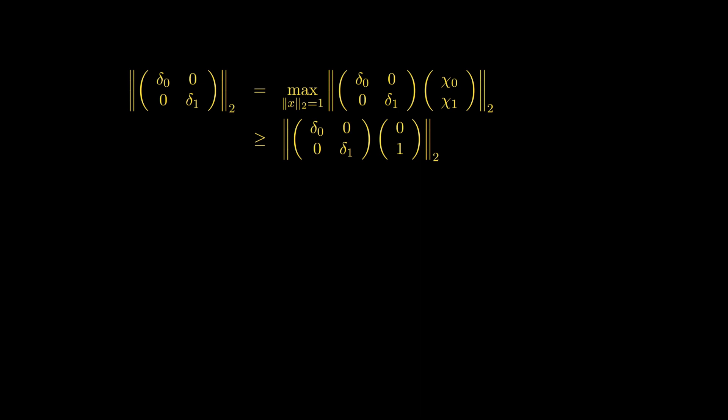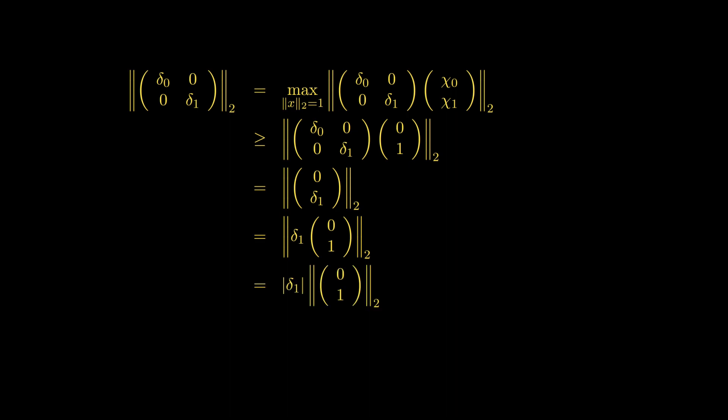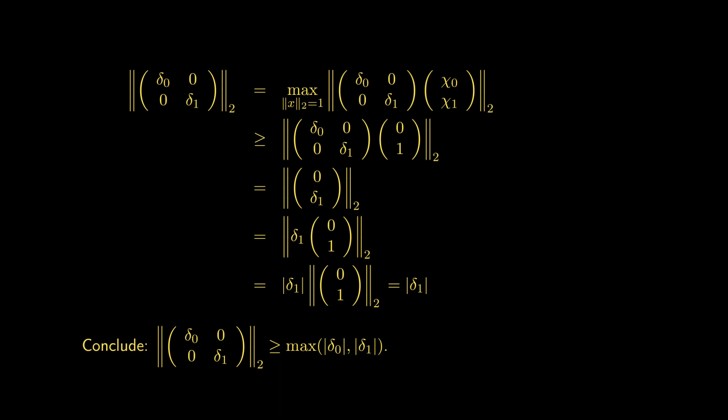Here we pick the standard basis vector (0,1). If we multiply it out, we can bring out δ₁, and we find that gives us the absolute value of δ₁. We could have picked the vector (1,0) or (0,1) — depending on which we pick, we get |δ₀| or |δ₁|. Therefore we conclude that the 2-norm of the diagonal matrix is greater than or equal to the maximum of the absolute values of the diagonal elements.